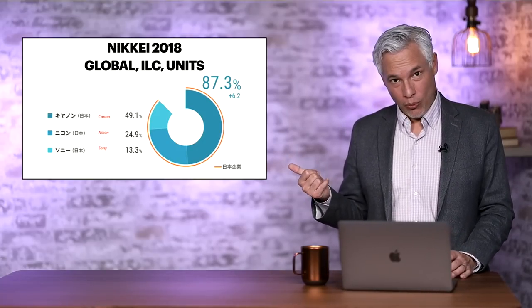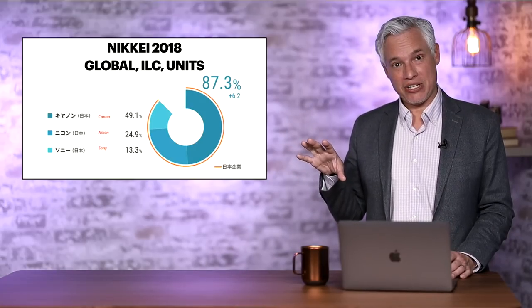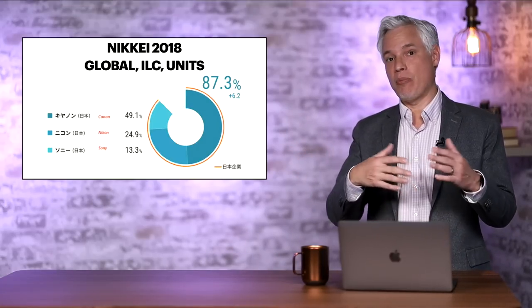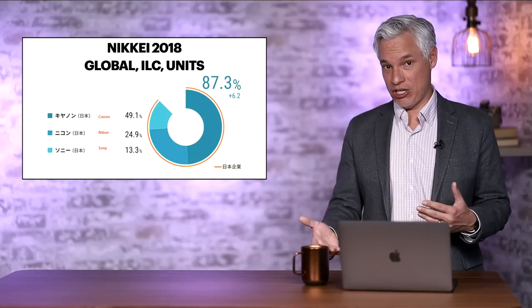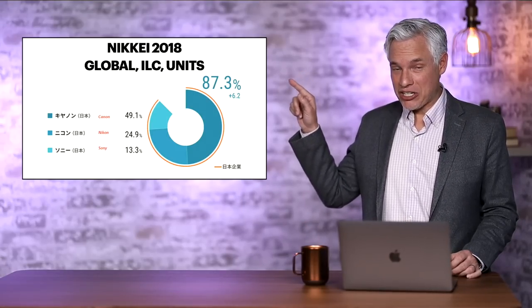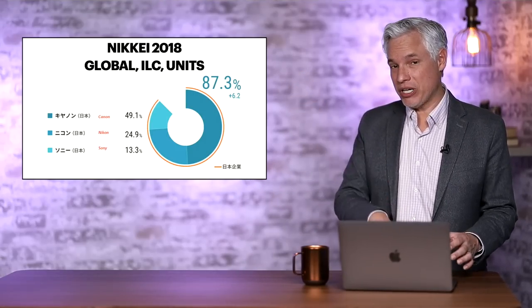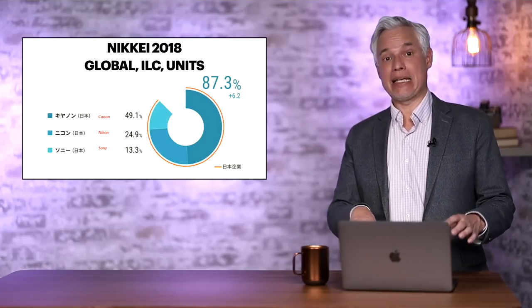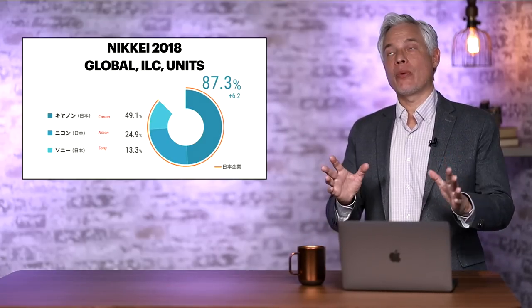Why is that such a discrepancy from the number one headline that we saw in the previous slide? Well, this is global. It's all interchangeable lens cameras, including everything from micro four-thirds, APS-C, not just full-frame. You'll also notice that this chart is expressed in units, actual camera units. So a $300 camera would count the same as a $3,000 camera.